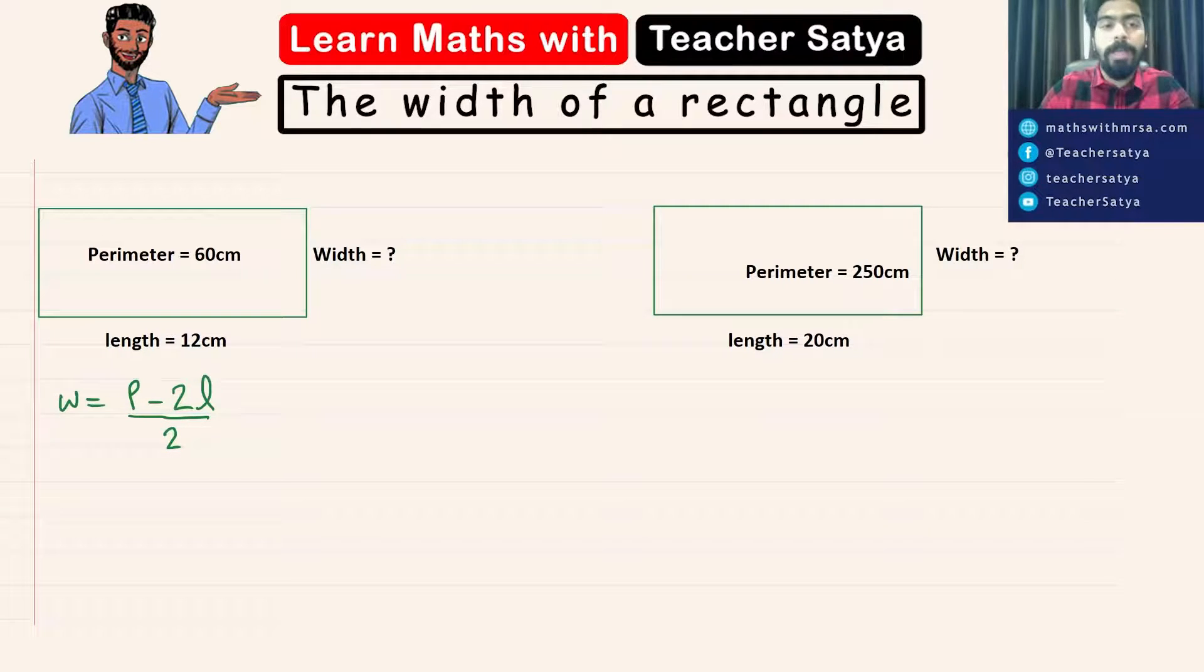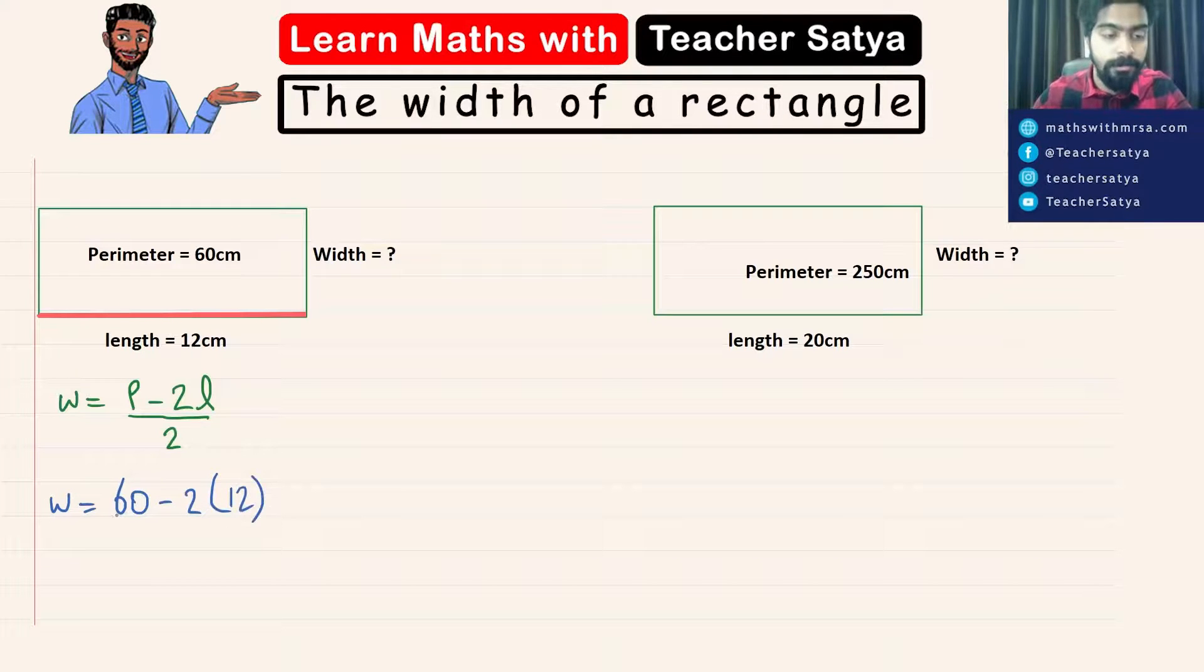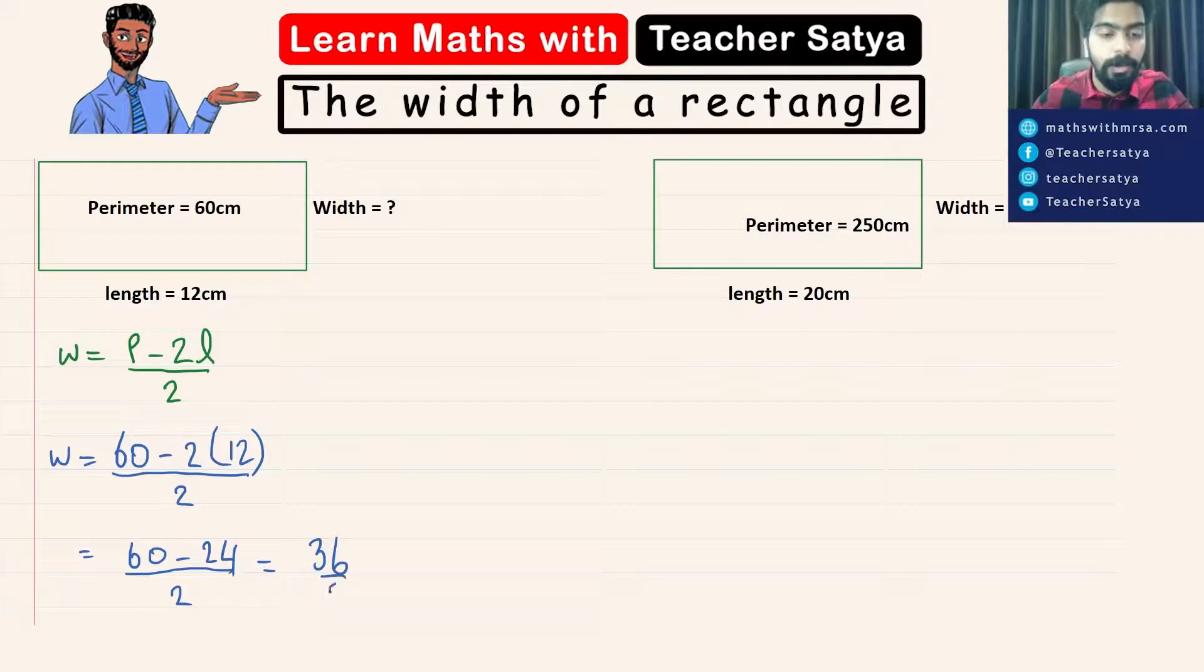All we have to do is take the values and substitute it here. The width is equal to perimeter in this question is 60 minus 2 times length, which is 2 times 12 divided by 2. So 60 minus 2 times 12 is 24 divided by 2. And 60 minus 24 is equal to 36 divided by 2, which is 18 centimeter.